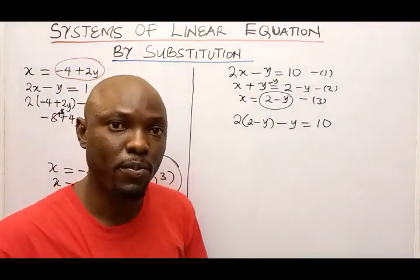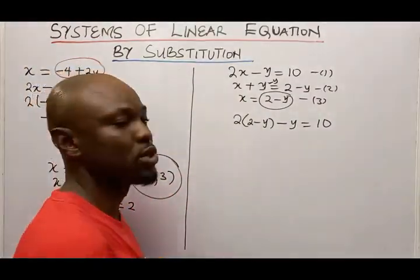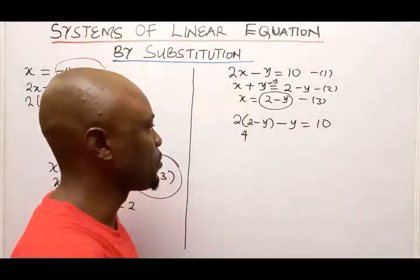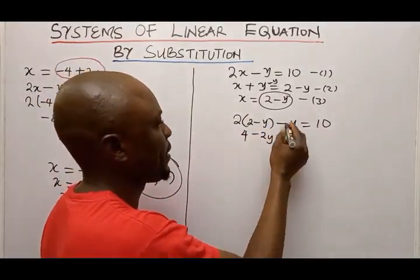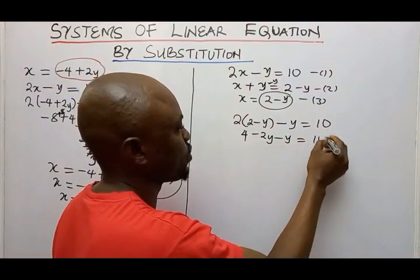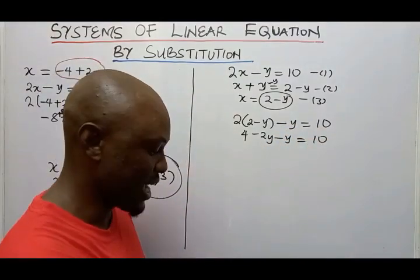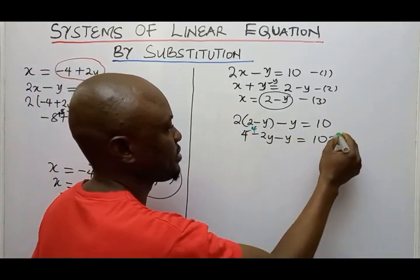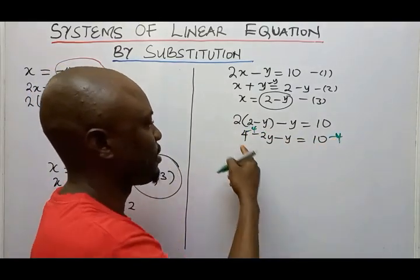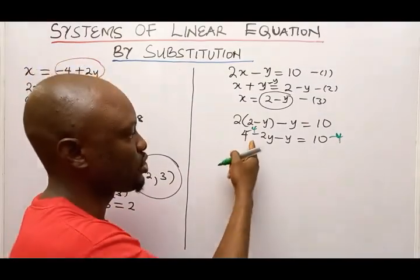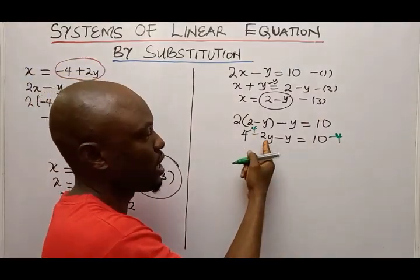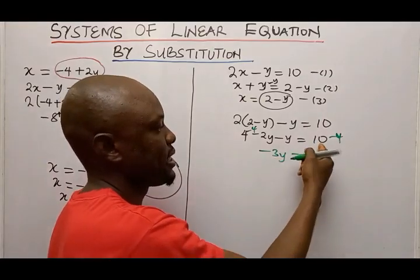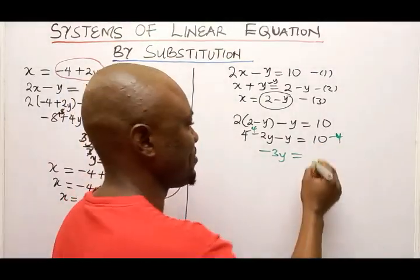Opening up the bracket: 2 times 2 gives me 4, and 2 times minus Y gives me minus 2Y. Then I have minus Y here, equal to 10. I subtract 4 from both sides — 4 minus 4 is 0 — so I have minus 2Y minus Y, giving me minus 3Y, equal to 10 minus 4, which gives me 6.